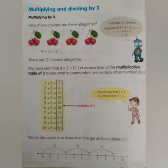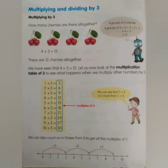We've seen that four times three makes twelve. Let's now look at the multiplication table of three to see what happens when you multiply numbers by three. We can see they jump up in threes: three, six, nine, twelve, fifteen, eighteen, twenty-one, twenty-four, twenty-seven, and thirty. We can also count on in threes from zero to get all the multiplications of three, as we can see on the number line.